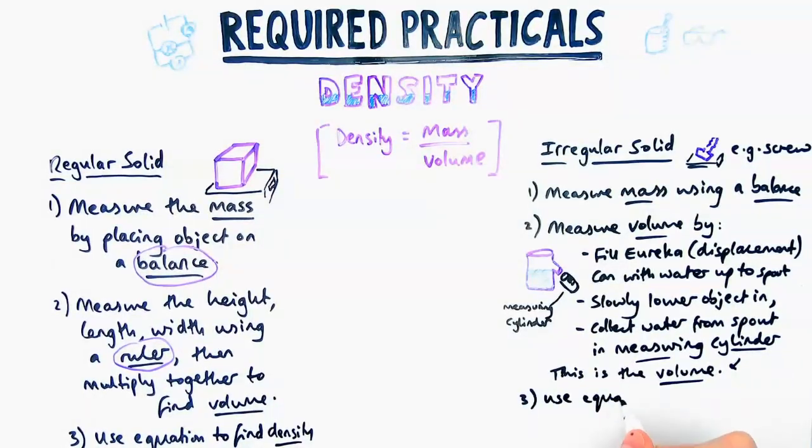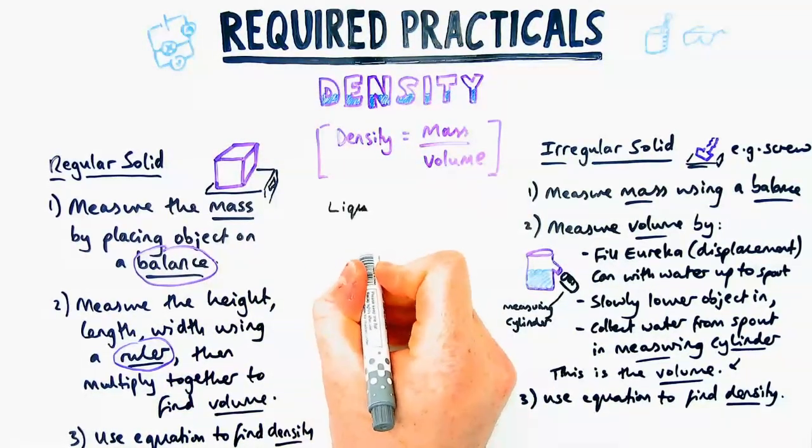The reading, or the amount of water that's in the measuring cylinder, is the volume. The volume of water measured is the volume of the object - that's the only way to get the volume. Once you've done that, the last step is the same as before: just do the mass divided by volume to find the density.